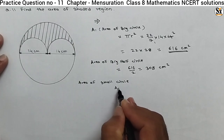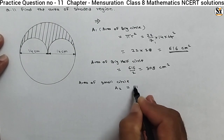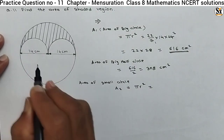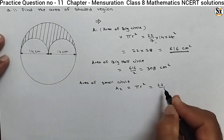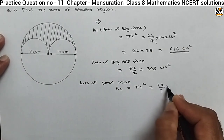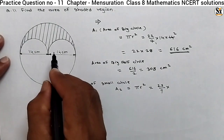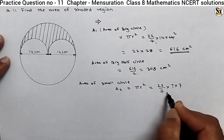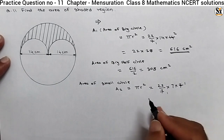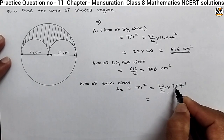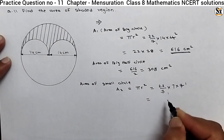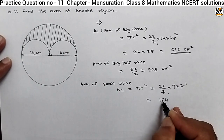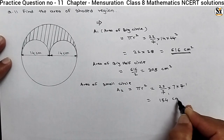Area of the small circle — let it be A2. That will be equal to pi R squared. Here R is: the diameter is 14, so R will be 7 for this case. So 22 upon 7 into 7 squared. The 7 in the denominator cancels with one 7 from R squared. We get 22 into 7, that is 154 centimeter squared.